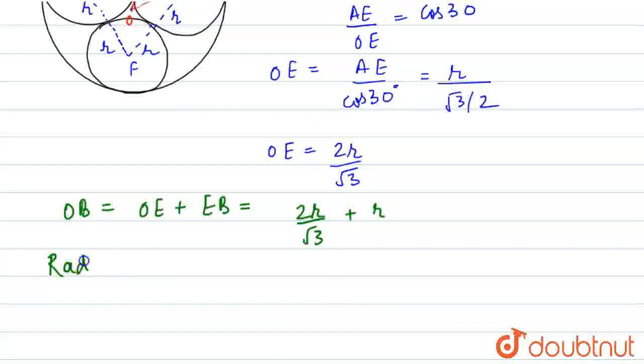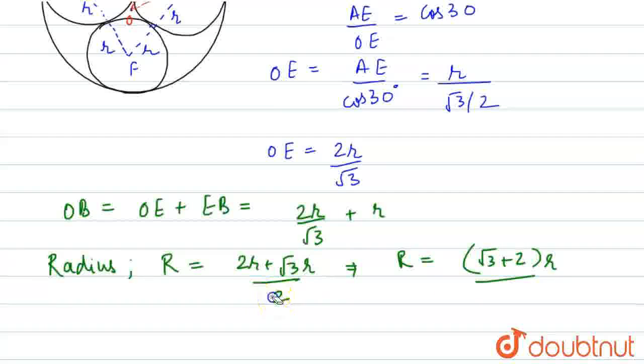Therefore, the radius of the bigger circle, capital R, will be equals to 2r plus root 3 times r, divided by root 3. This gives R equals root 3 plus 2 times r upon root 3. So this is the answer. The radius of the bigger circle is this.